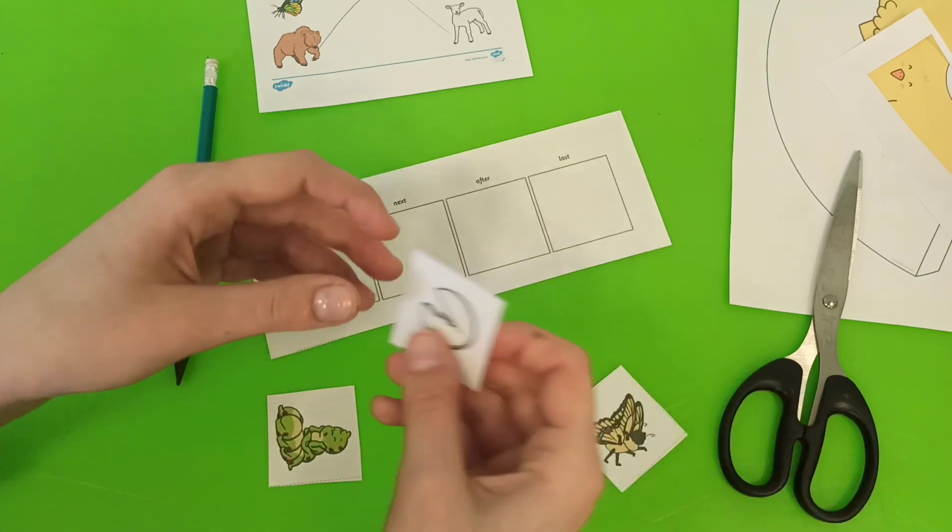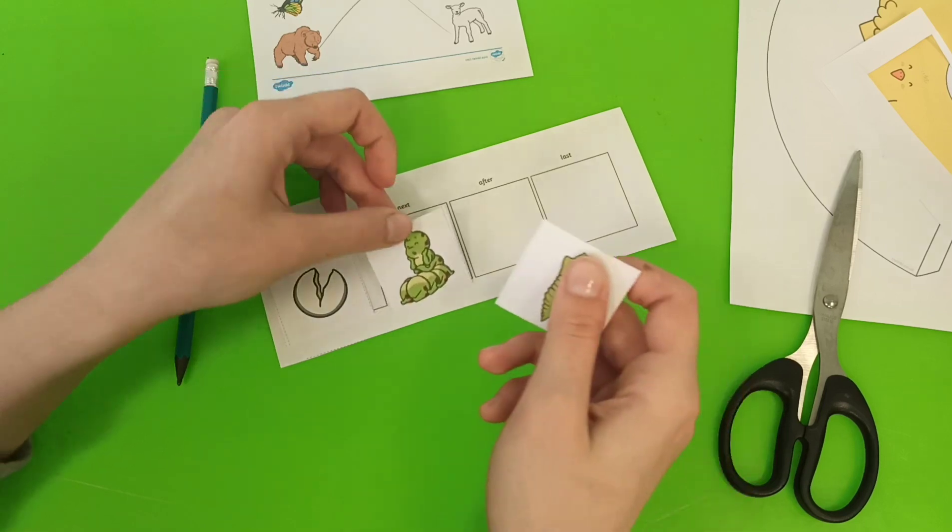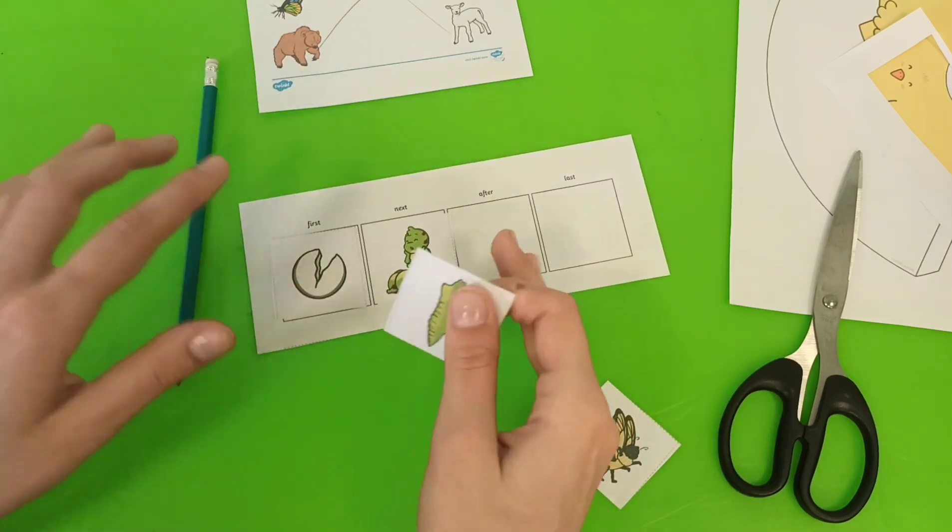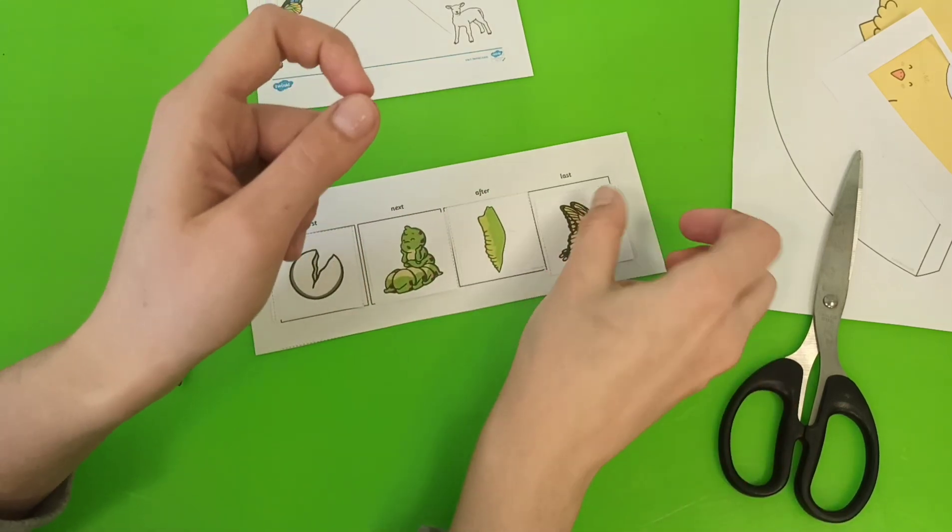First, there is an egg. Next, there is a caterpillar. After, there is chrysalis or cocoon. And last, there is a butterfly.